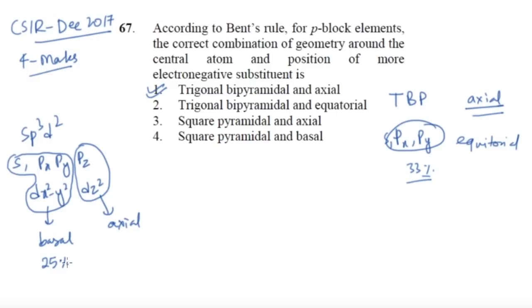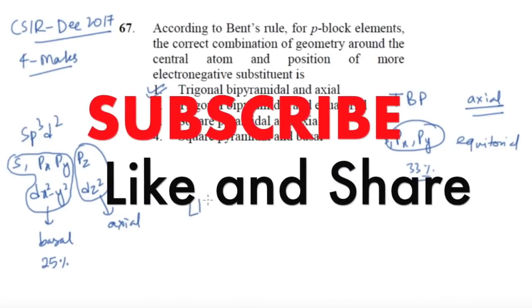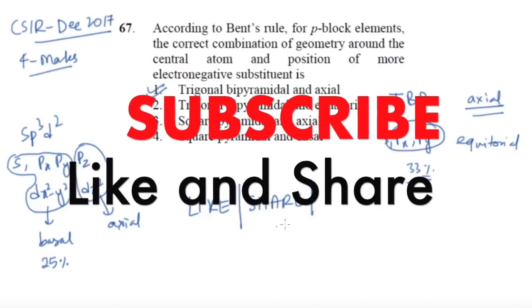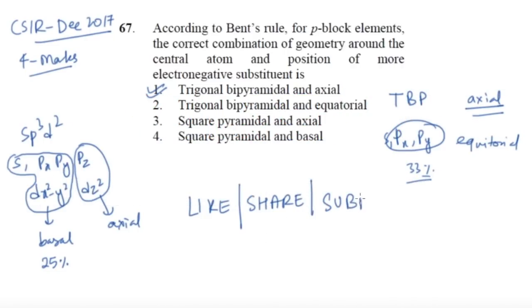That's all for this particular video. I hope it was clear and you understood how Bent's Rule works and why it applies more effectively to trigonal bipyramidal geometry. Whenever you see a trigonal bipyramidal molecule with substituents of different electronegativity attached to the central atom, remember that Bent's Rule applies there. If you liked this video please like and share it with your friends, and if you're new to the channel please subscribe. Thank you so much for watching — have a great day, bye bye!